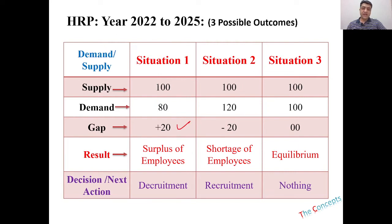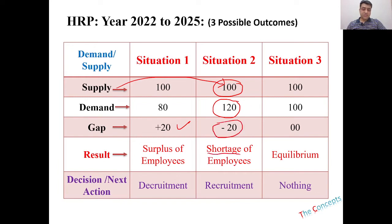In the second situation, the supply is 100 people, but we will be needing 120 people — maybe because we are starting new projects during this time. So the second situation is the shortage of people: you have 100 people but need 120, meaning 20 extra people will be required.